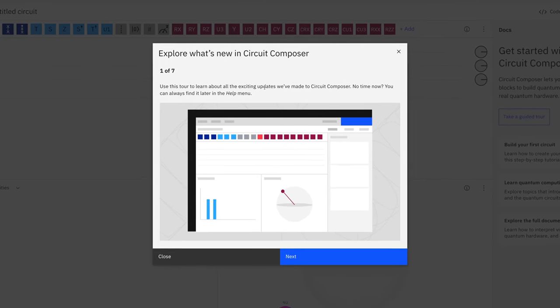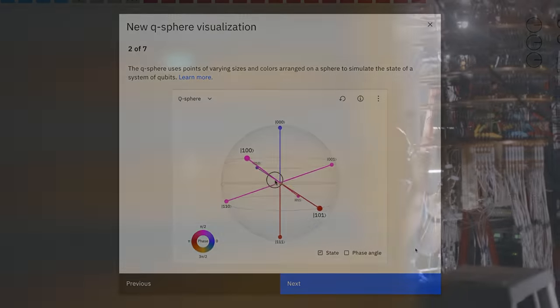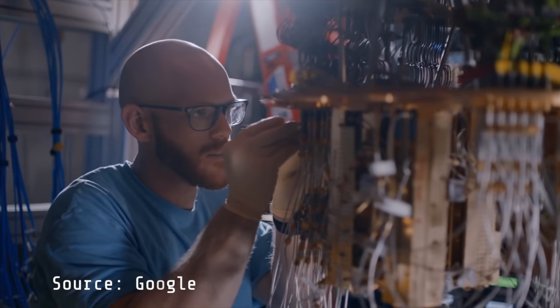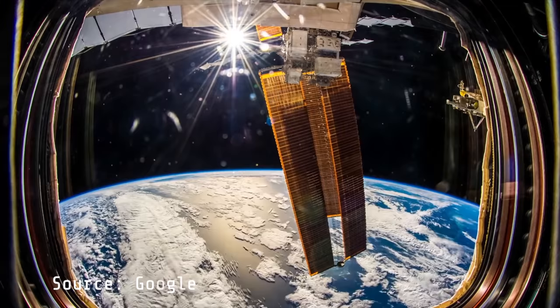Right now, IBM has a quantum computer which users can interact with on their website. On October 23, 2019, Google, in partnership with the U.S. National Aeronautics and Space Administration, NASA, announced that it had achieved quantum supremacy, the point at which a quantum computer can actually outperform a classical computer.